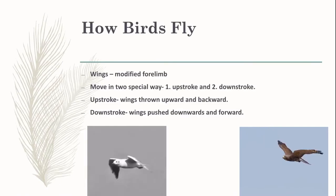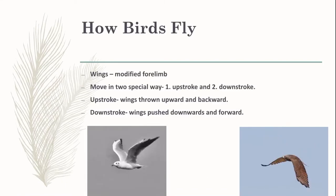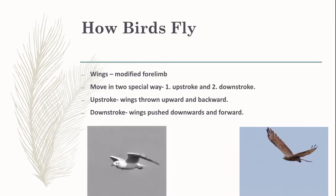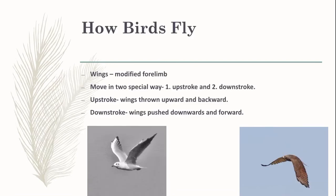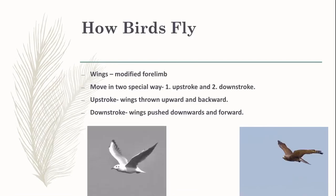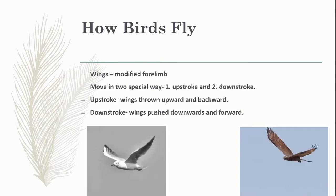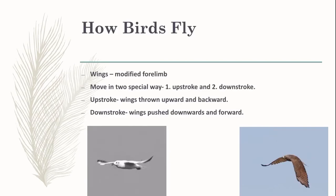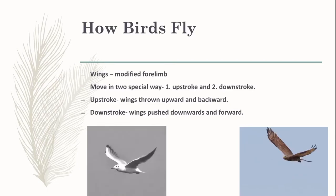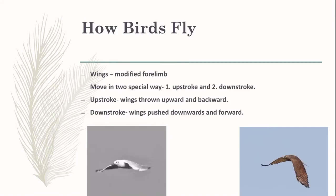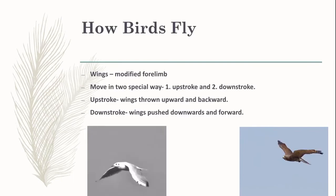In upstroke, the wings are thrown upward and backward — the picture on the left-hand side shows the direction of upstroke. In downstroke, the wings are pushed downward and forward — the right-hand side picture shows the downstroke direction. These strokes lift the birds into the air and the bird flies.